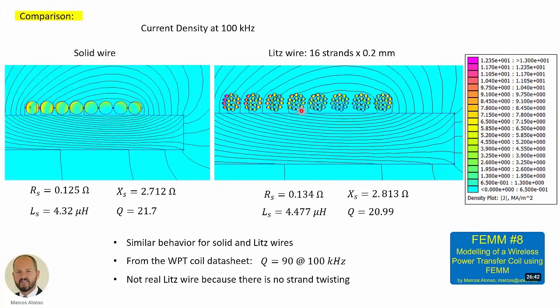This is mainly due to the distribution of the magnetic flux density and the proximity effect between the different turns. So, at the end, we get very similar values for the series resistance, the reactance, inductance, the quality factor. In both cases, the resulting values are very similar using solid wires and Litz wires.